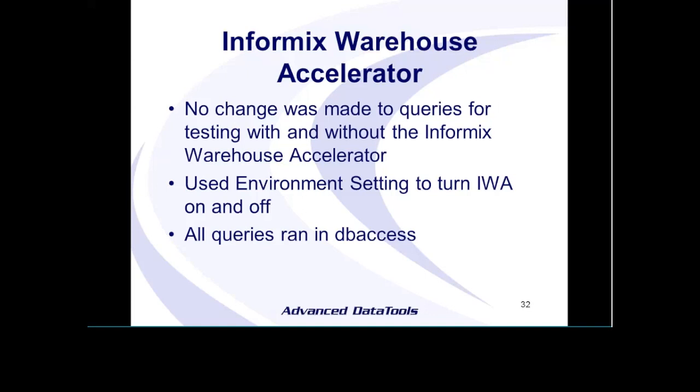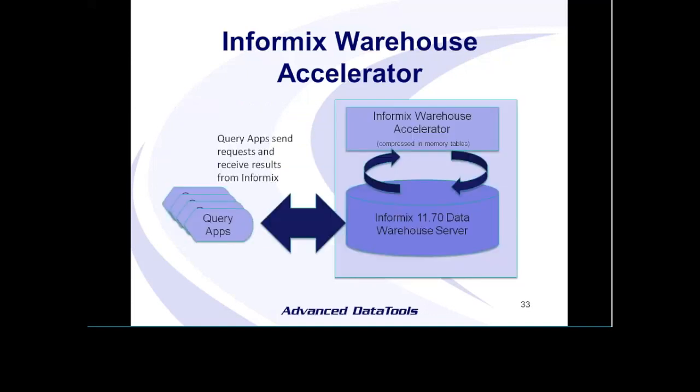Everything I showed you was run in dbaccess. It's important to understand how the accelerator fits in — it is a separate product, installed separately from the engine. It can be on the same machine or a different machine. Once it's installed, it puts entries in the SQL hosts file of your server, and then the server will offload queries to the accelerator if it can. It doesn't matter what you're querying with — whether it's dbaccess, third-party apps, or whatever. The accelerator just sits there, the engine offloads to it if it can, and nothing else has to change. You just put it in place, set it up, and you should be good to go.